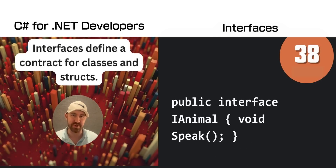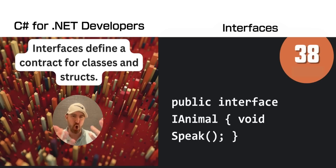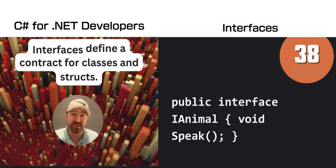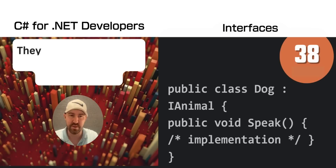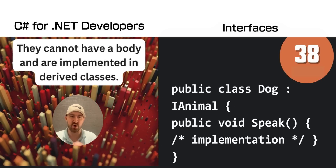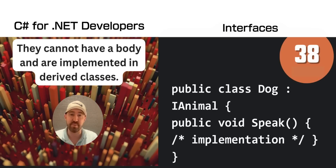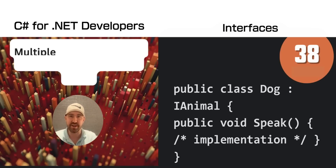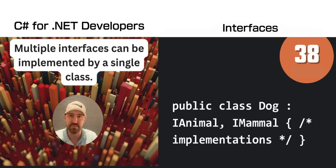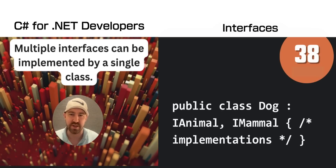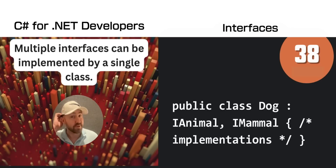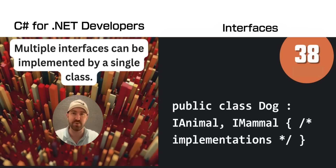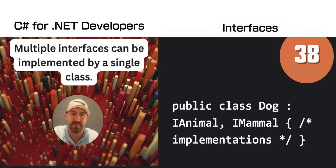Interfaces are super useful and define a contract that a class or struct needs to meet. Here you can see the Dog class implementing the IAnimal interface and implementing the method Speak. A class can implement multiple interfaces, but if it does, it needs to implement all of the defined methods.